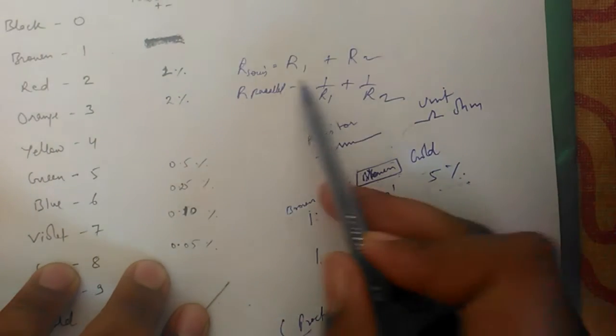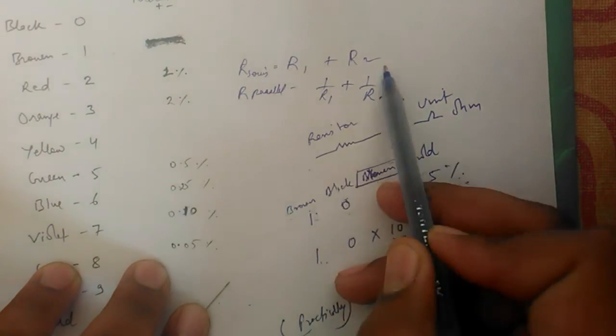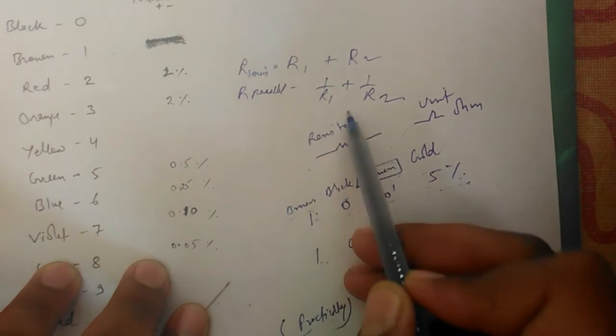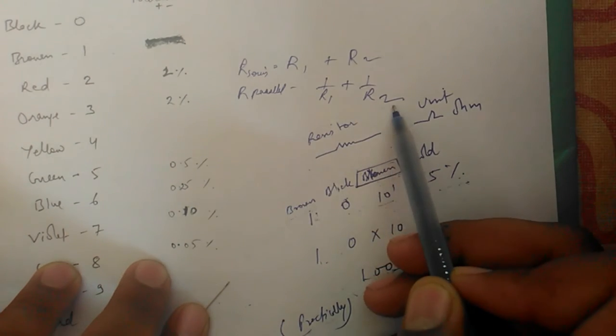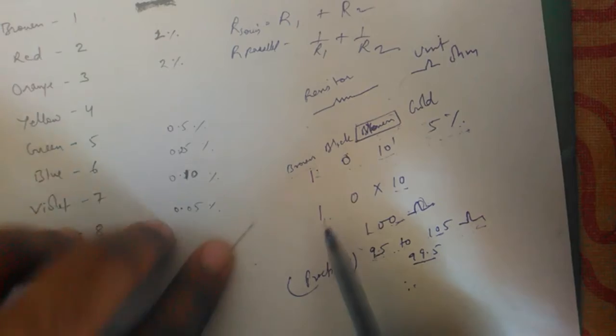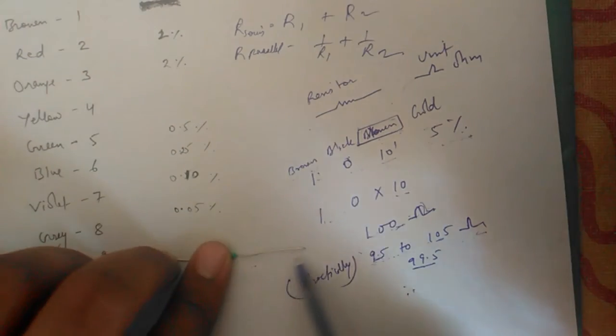For resistors in series, you can calculate by R1 plus R2. For resistance in parallel, you can calculate by 1 over R1 plus 1 over R2 if we connect the resistances in series or parallel.